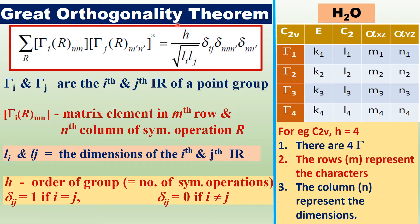According to this theorem, the summation over all symmetry operations R of Γ_i(R)_mn multiplied by the complex conjugate of Γ_j(R)_m'n' is equal to H divided by the square root of L_i·L_j, times δ_ij · δ_mm' · δ_nn'.